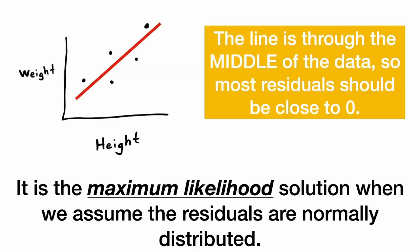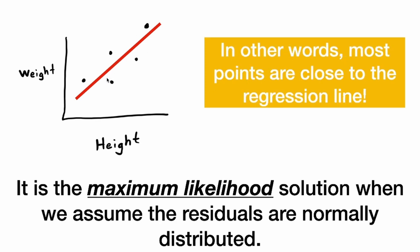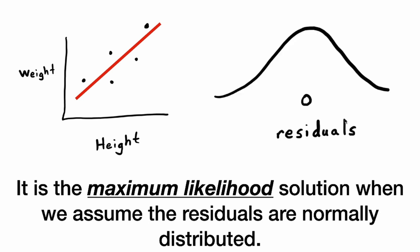Well, the red line goes through the middle of the data, right? So most residuals should be close to zero. Some will be a little above zero and some will be a little below zero. In other words, most points are close to the regression line. So the residuals are centered around zero if our line goes through the middle of the data.